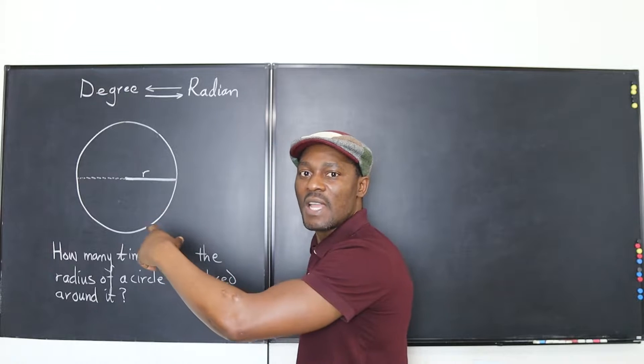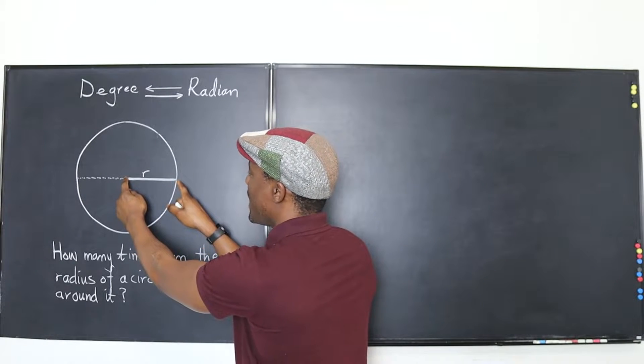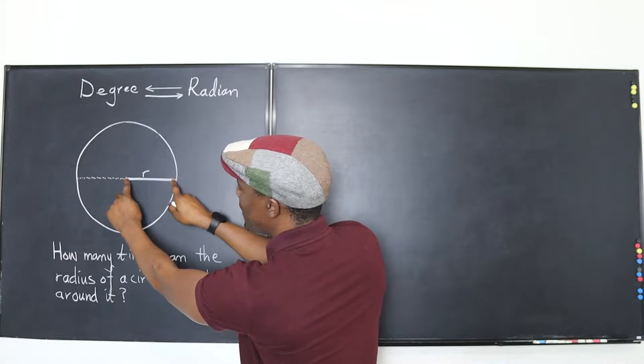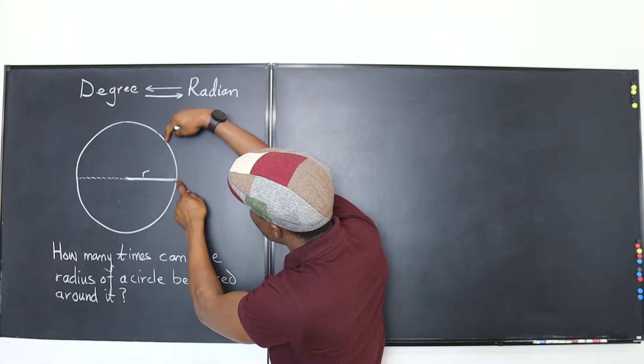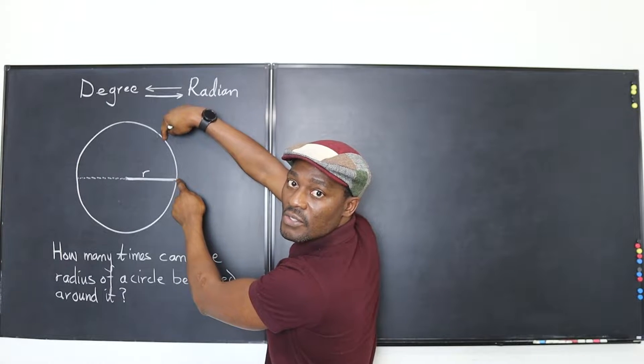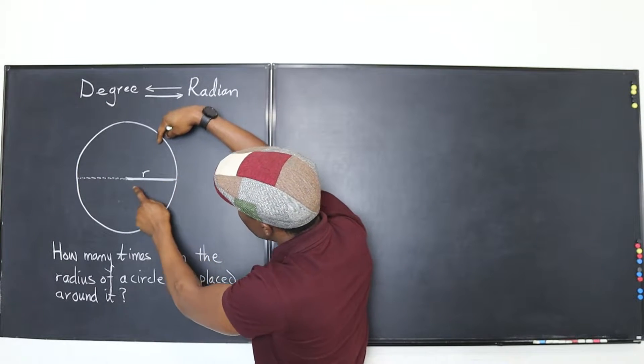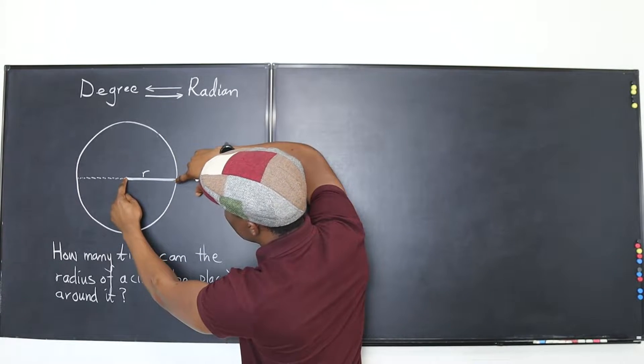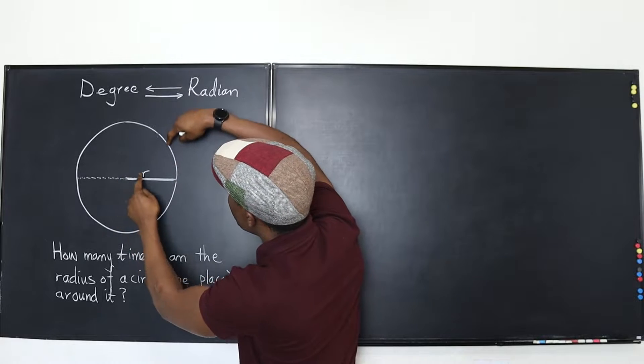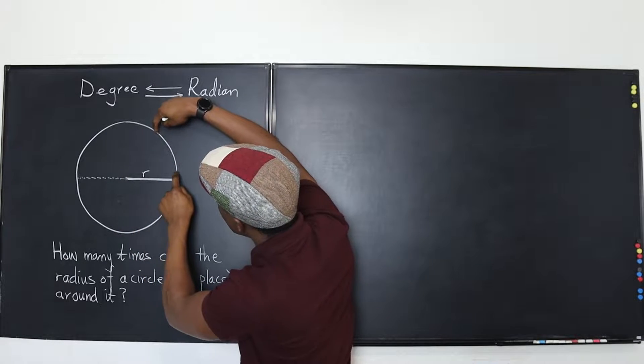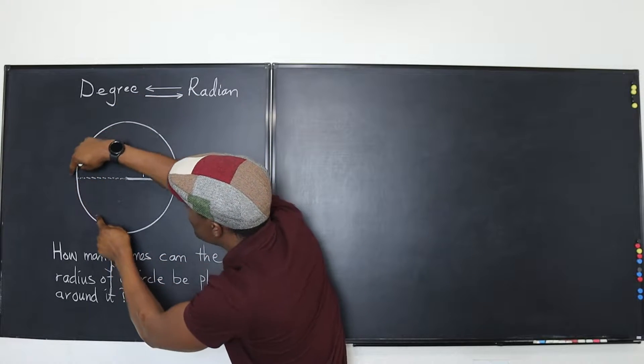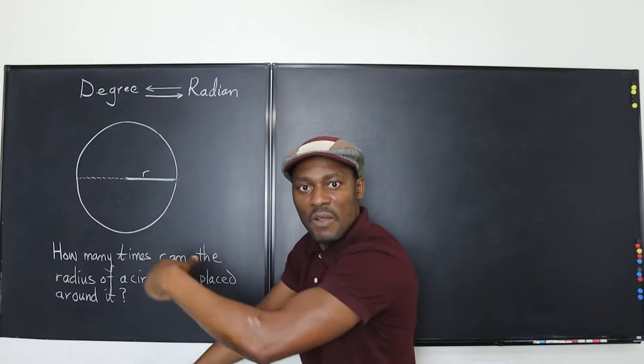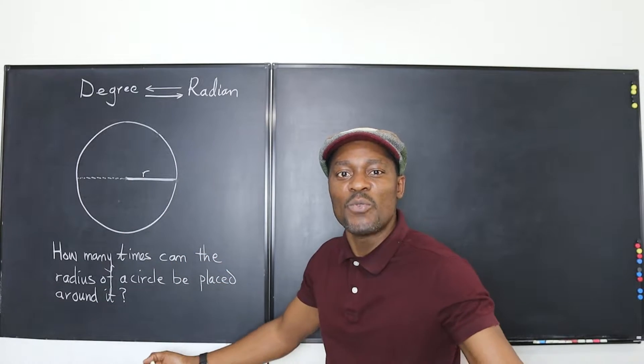If you have a circle and you know what the radius is and you want to place the radius along this circumference of the circle, how many times do you think you can place this radius around the circle? That's what you call a radian measure.